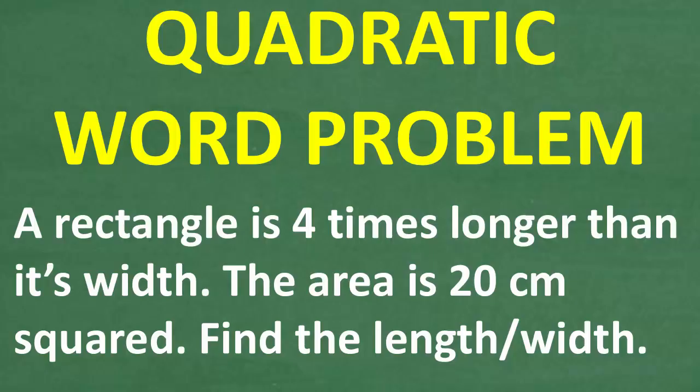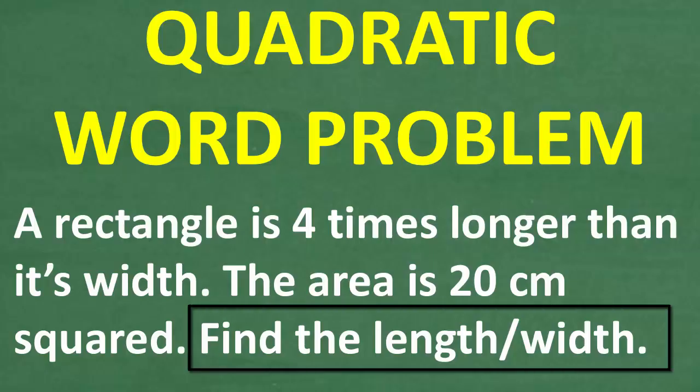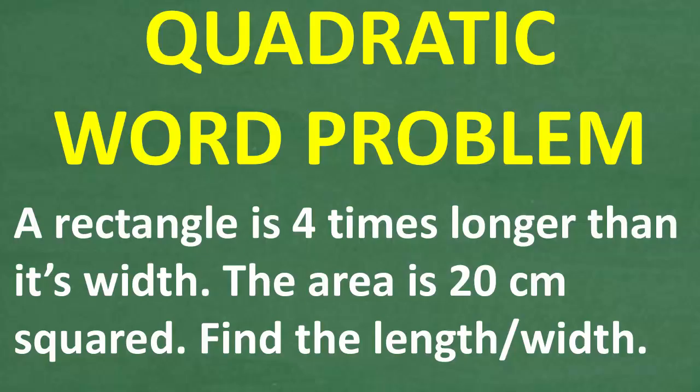Let's take a look at the solution to this quadratic equation word problem. By the description of this problem, we're going to have to use a quadratic equation to find the solution. What's the first three steps of solving any algebra word problem? One, read the problem. Two, reread the problem. And then, lastly, read the problem again and make sure you really understand the question. Here, we're trying to find the length and width of a rectangle, and our area is in centimeters squared, so our length and width will be in centimeters — don't forget to put that in your answer.